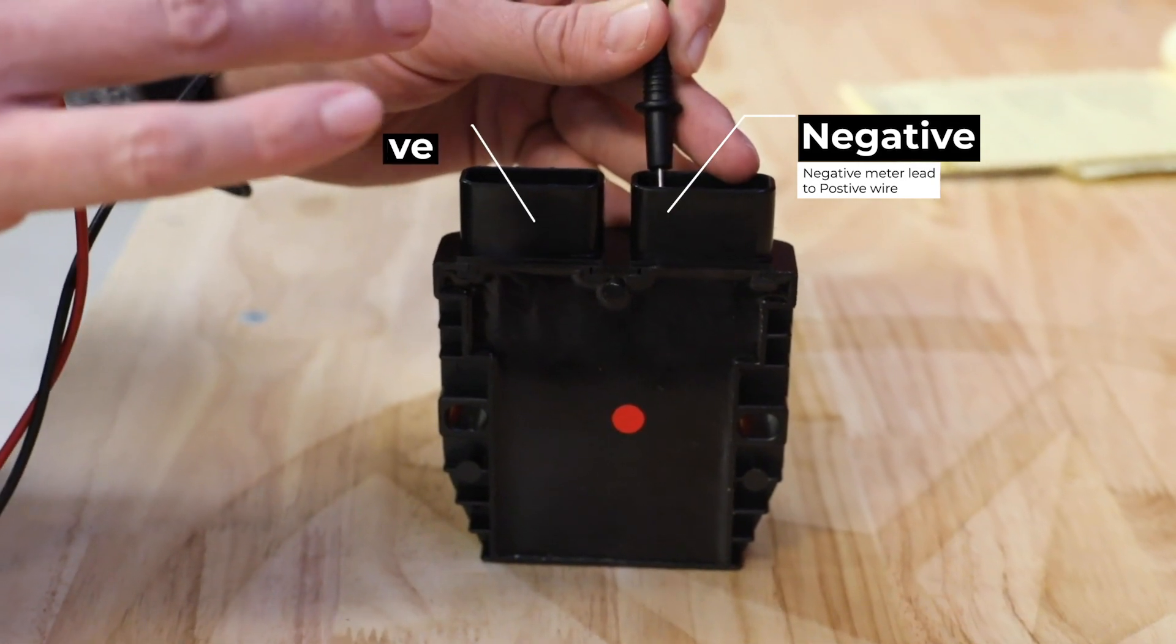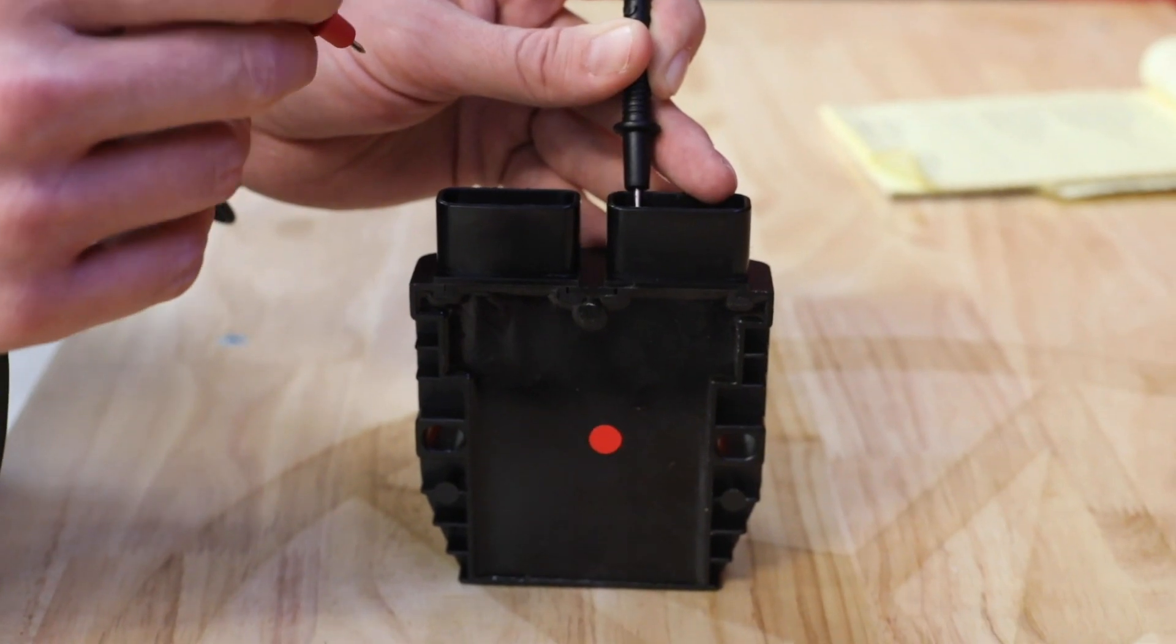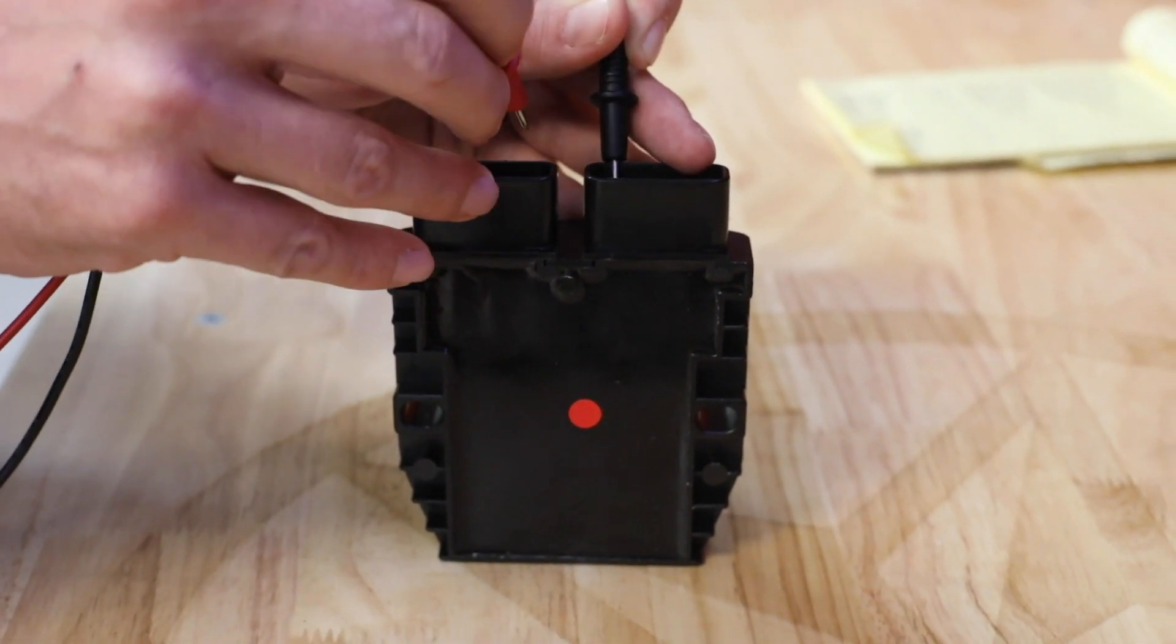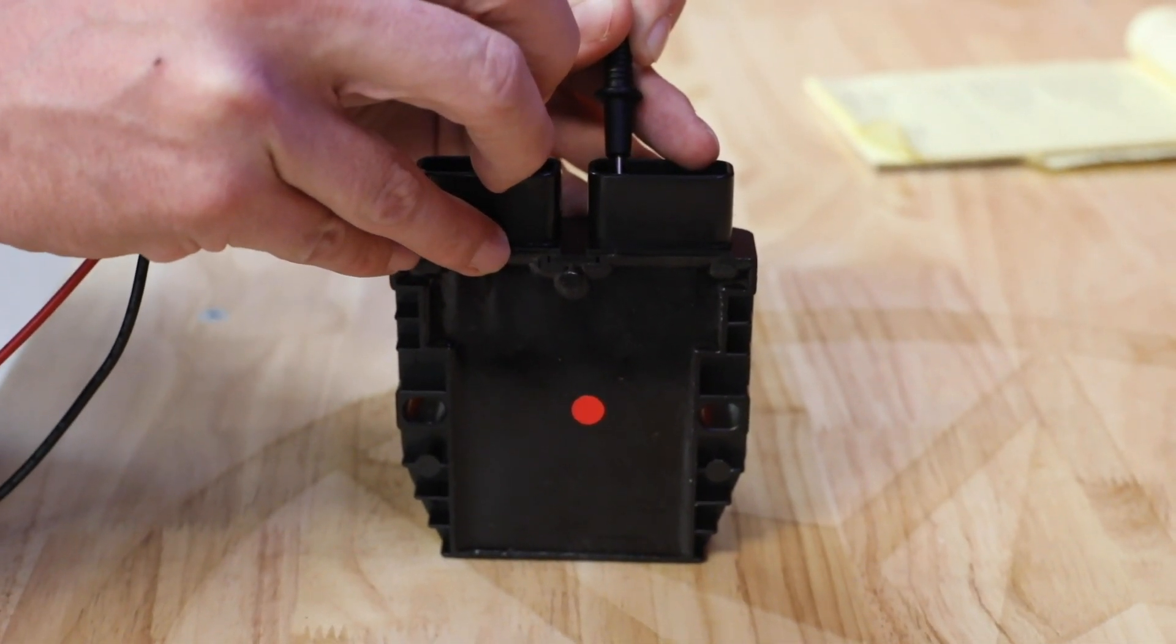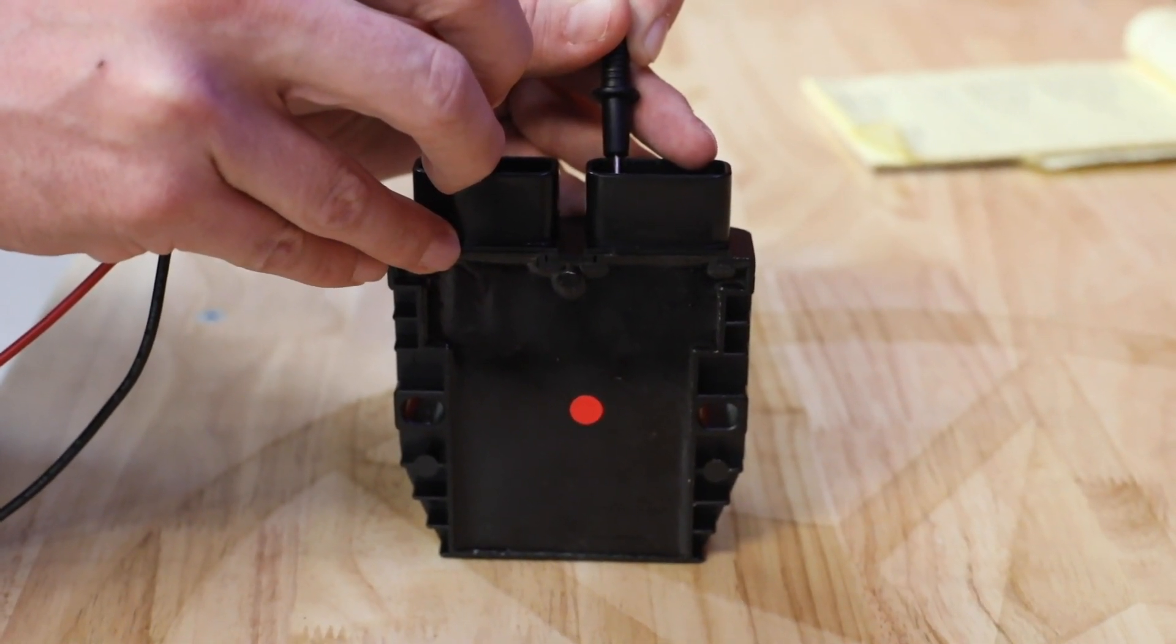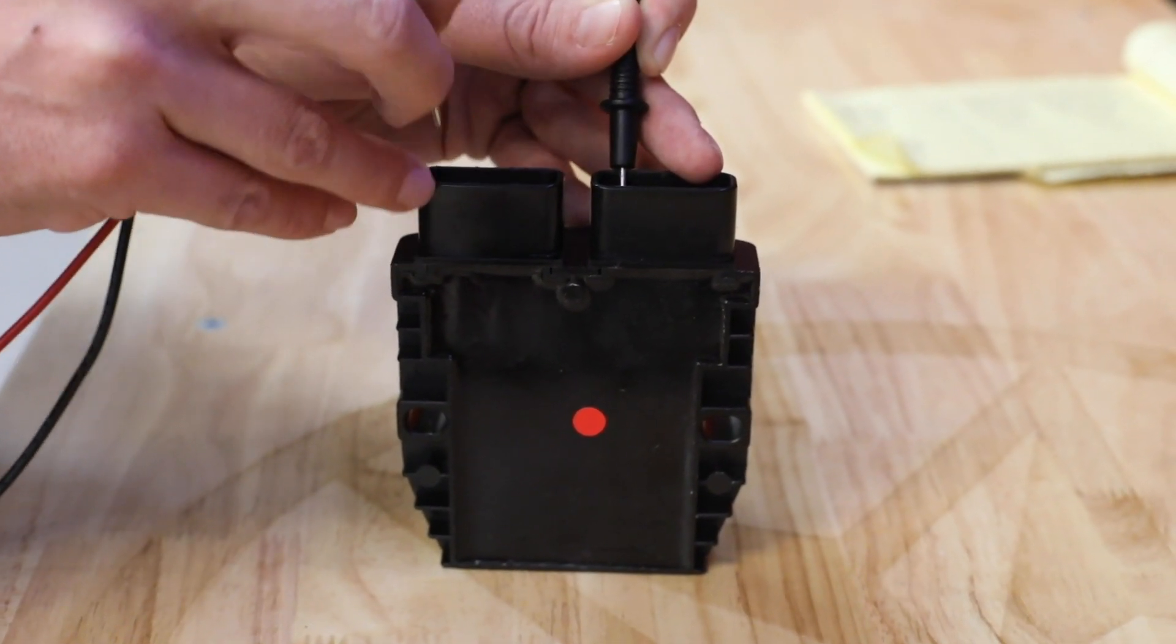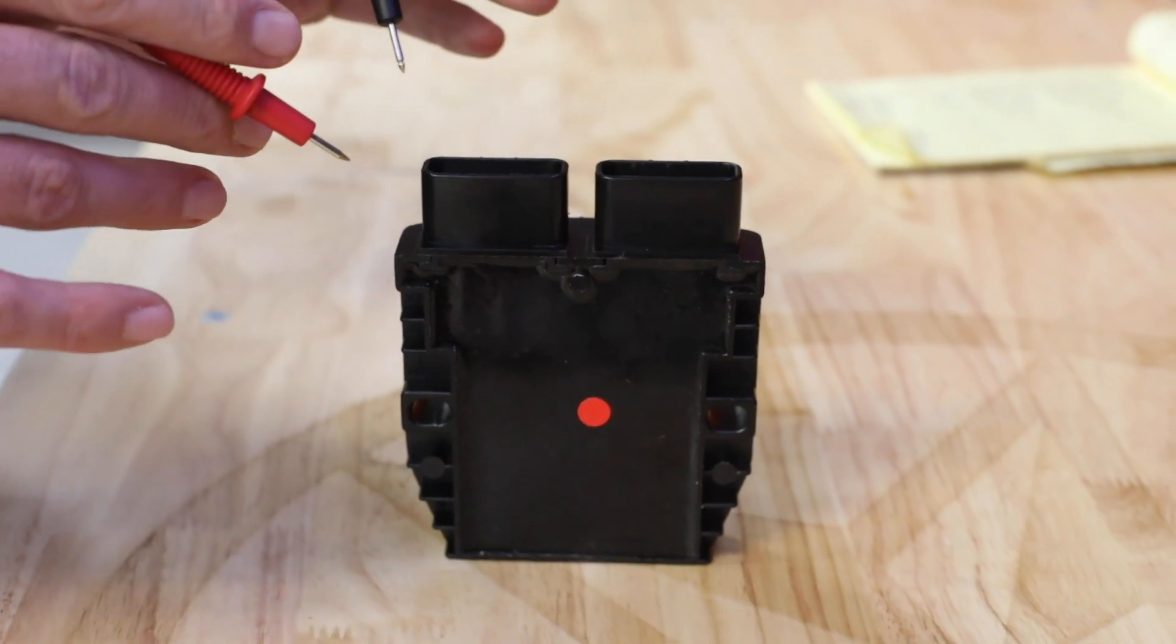And then with our positive lead we're just going to test across each three pins. And here we're going to want to read 0.3 to 0.5 volts DC. All right, so on this one we're well within spec.